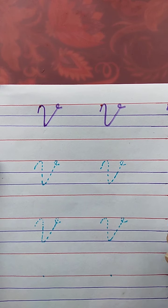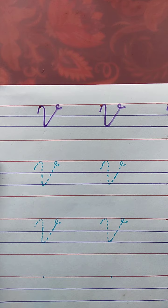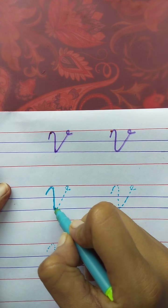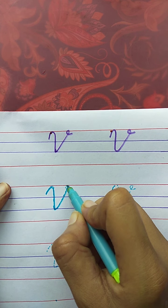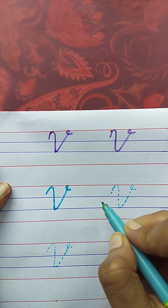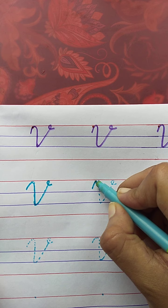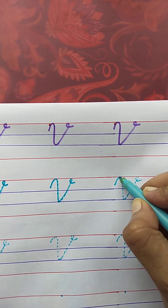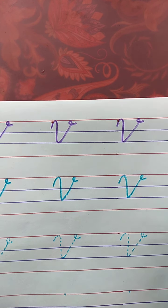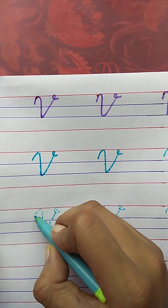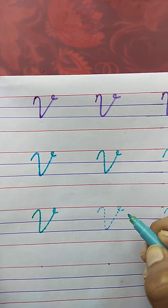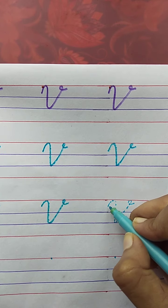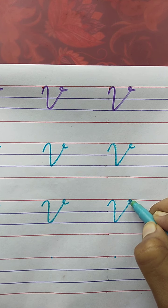V. V for Van. See here. The spelling of Van is V-A-N. Van. Curve, slanting line. V for Van. Draw with me: curve, slanting line, slanting line, and a loop. V for Van. The spelling of Van is V-A-N. Van. Write with me: V-A-N. Van. Very good. V-A-N. Van.